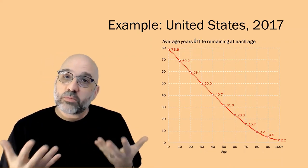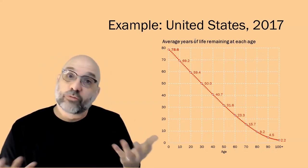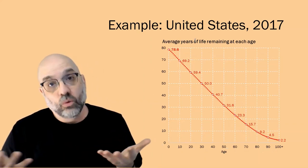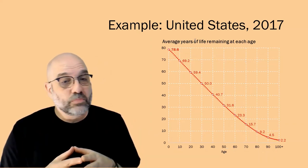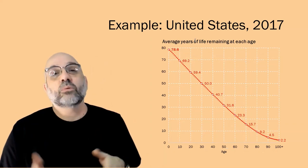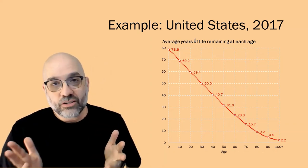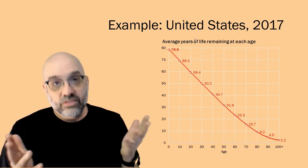So just looking at the experience of those 100,000 people, we can calculate how long the average member of that hypothetical cohort lived. In this case, United States 2017, the average member of that hypothetical cohort lived 78.6 years. That was the life expectancy in the United States, that top line number that we hear so much, life expectancy 78.6.